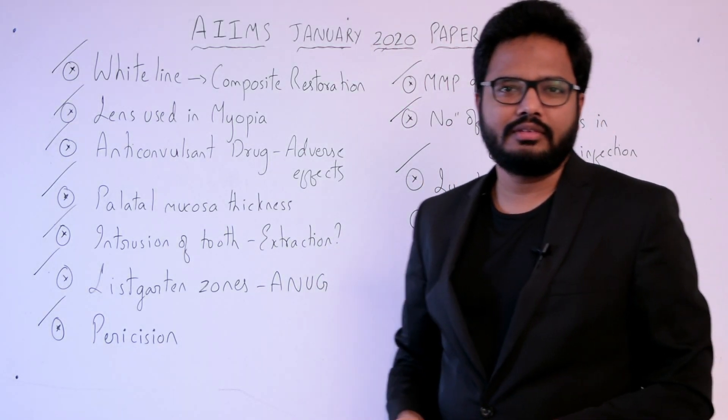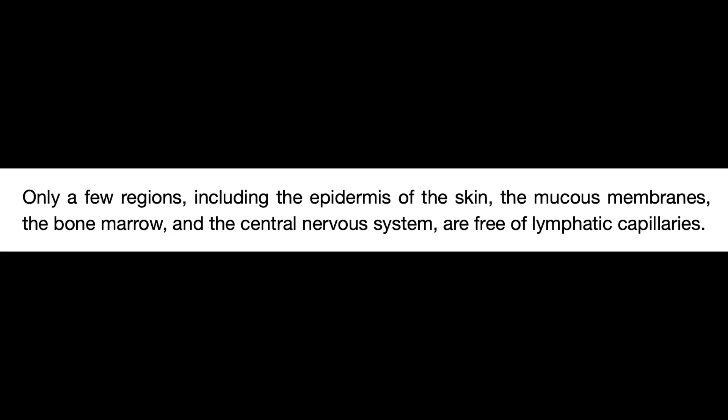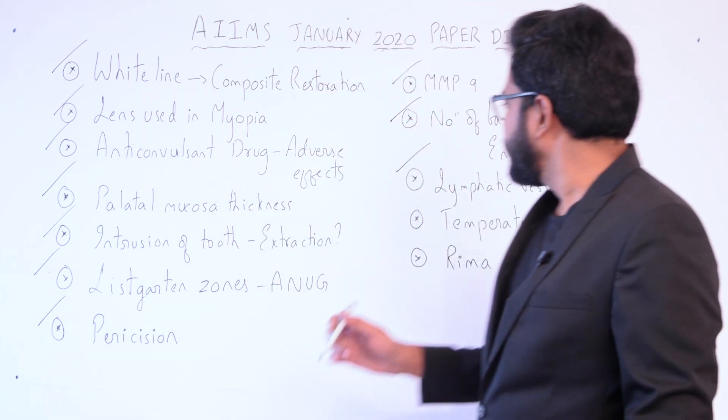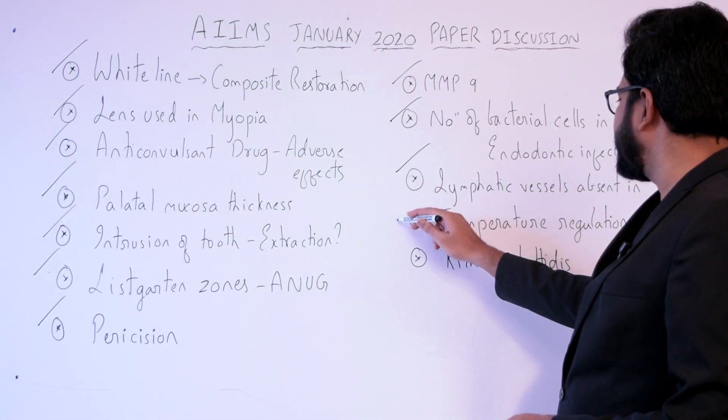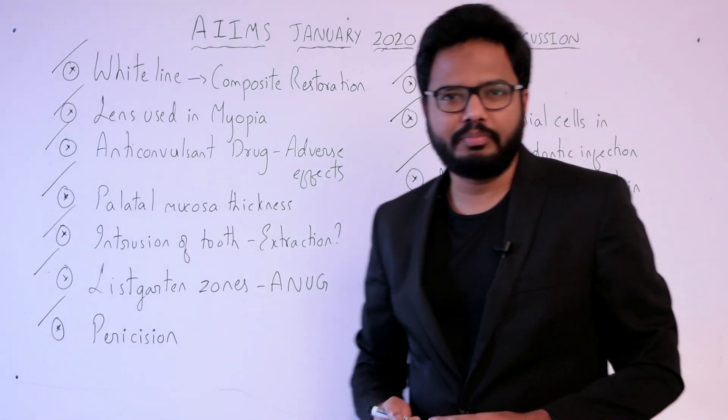Lymphatic vessels are absent in only a few regions: the epidermis of skin, mucous membranes, bone marrow, and the central nervous system are free of lymphatic capillaries.